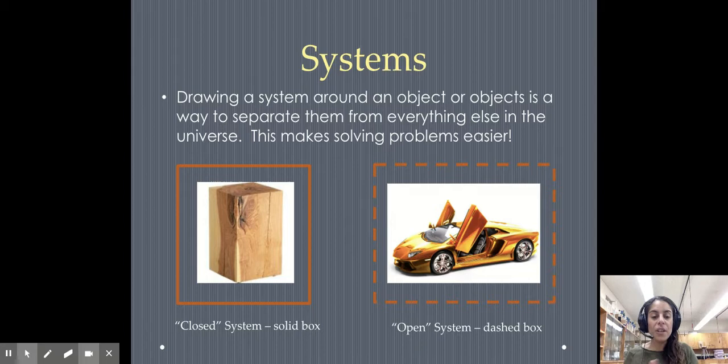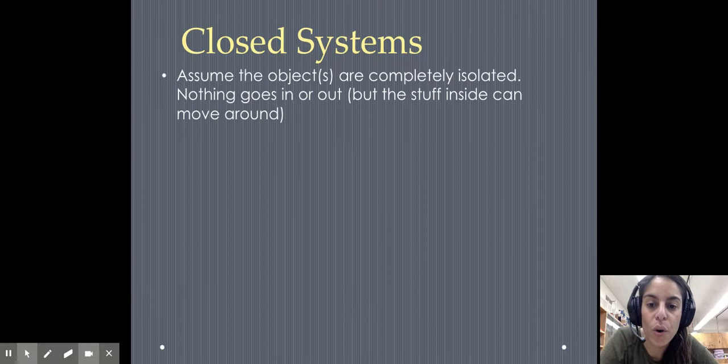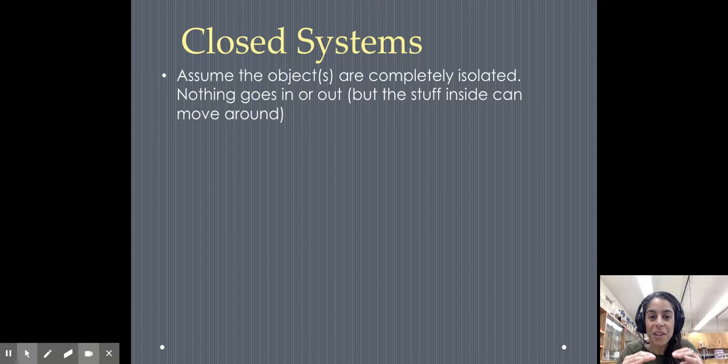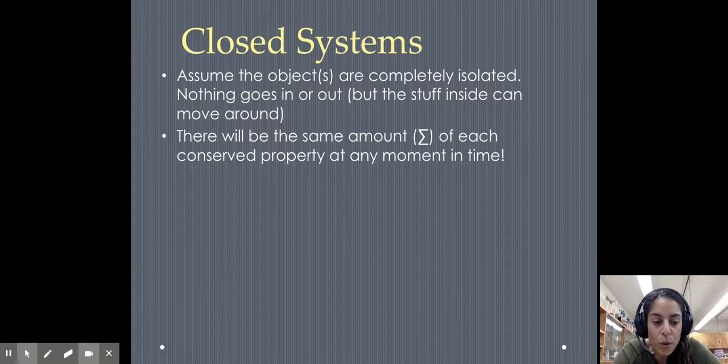So the difference between these two in a sense is this. A closed system, we talk about matter not being able to enter and exit the system. In an open system, it can. A closed system, you're assuming the object or objects in that solid line box are completely isolated. So nothing goes in or out, but the stuff inside there can kind of move around and transform. I think of a closed system as like a locked door to a room. Nothing can enter or exit.